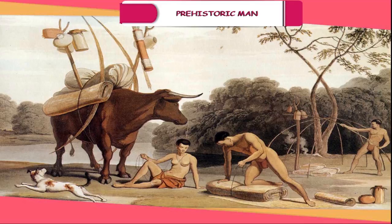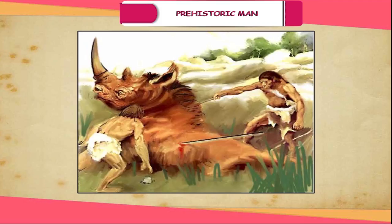He had to go from place to place in search of food, as forests produced seasonal resources and animals also moved in search of water and prey. Man, being physically weak in comparison to animals, started collective hunting in small groups. At the time of need, they helped each other also.